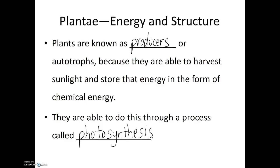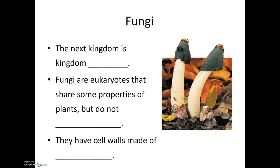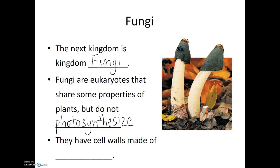The next group of organisms we are going to talk about is Kingdom Fungi. Fungi are eukaryotes that share some properties of plants, but they do not photosynthesize. These include organisms like mushrooms and molds. Another difference between fungi and plants is that the cell walls of fungi are not made of cellulose — instead, they are made of a protein known as chitin. This protein is actually more similar to proteins that make up the exoskeleton of certain insects and crustaceans than it is to the cellulose that makes up plant cell walls.